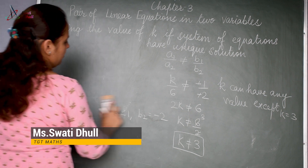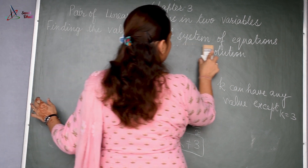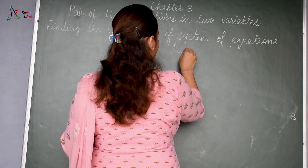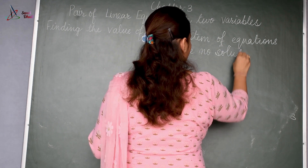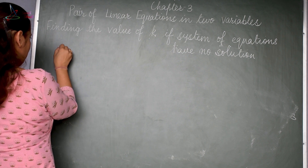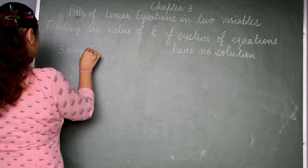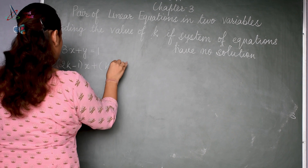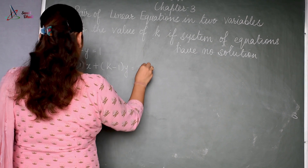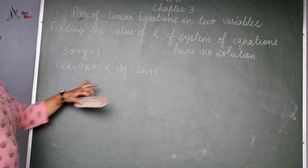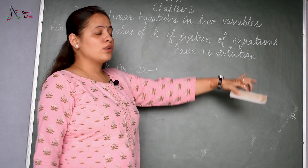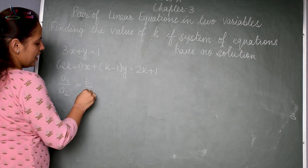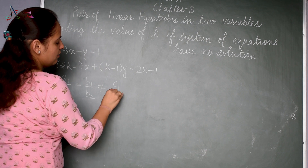Now the second case: finding the value of k if the system of equations has no solution. The condition for no solution is a1 by a2 is equal to b1 by b2, but is not equal to c1 by c2.